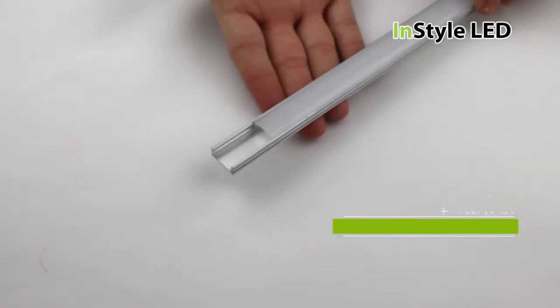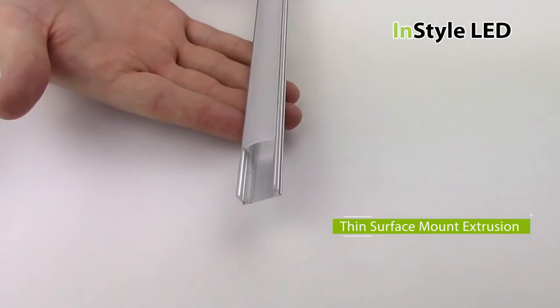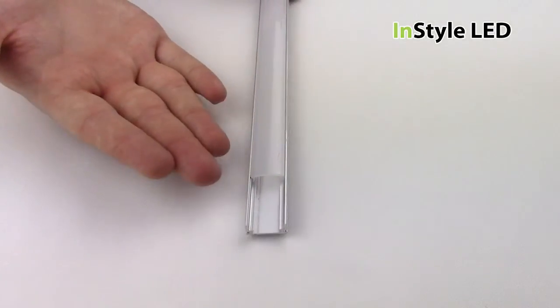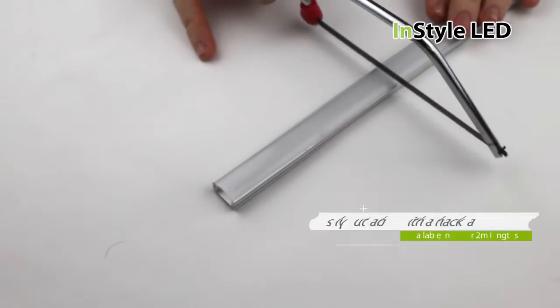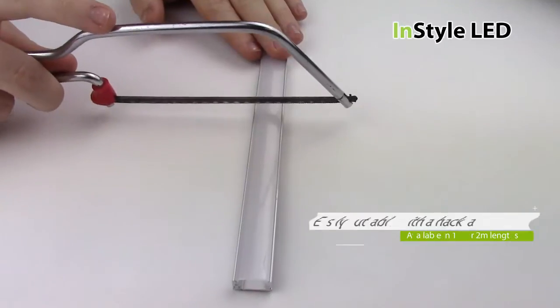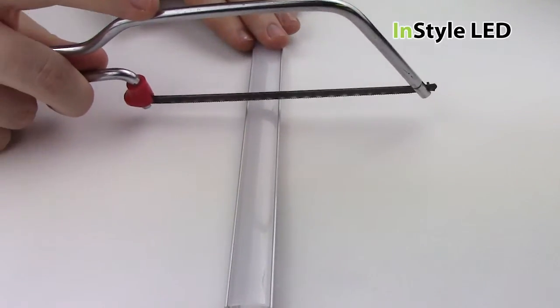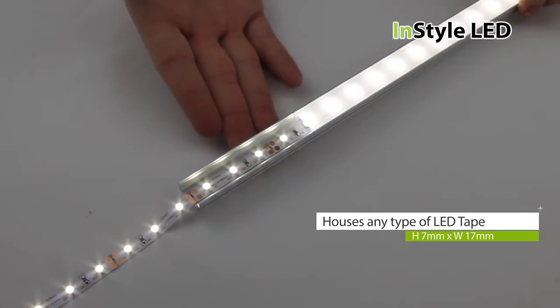This is the Thin Surface Mount Extrusion by InStyle LED. It is available in one or two metre lengths and is easily cutable to size using a hacksaw. It is 7mm high and 17mm wide.